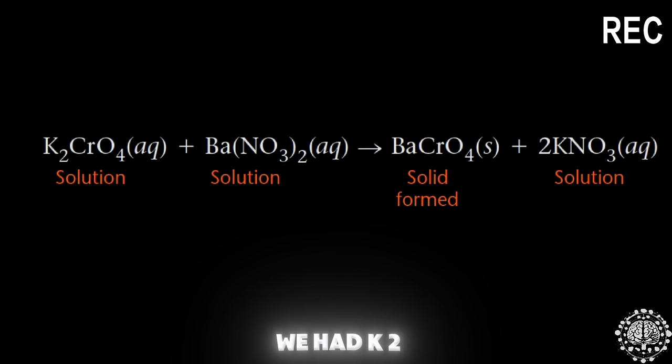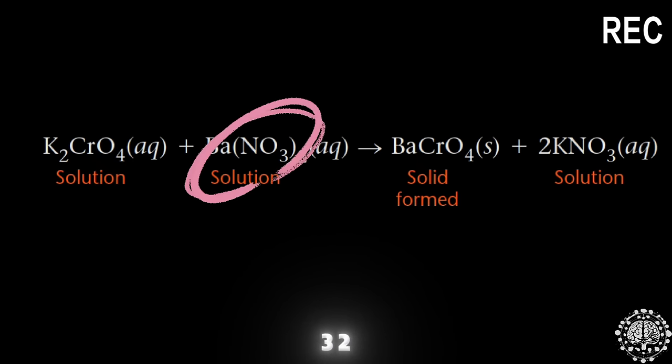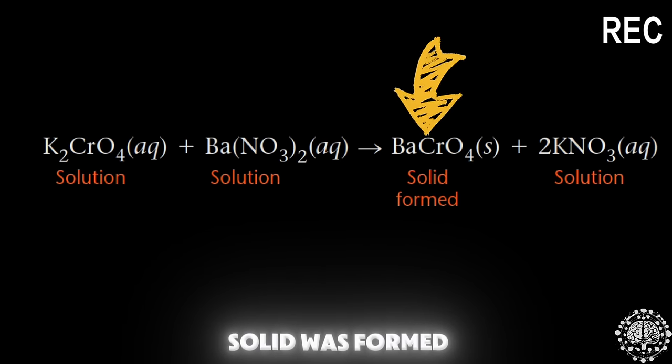For example, you can see in this reaction we had K2CrO4 and Ba(NO3)2. Now we can see that the solid was formed because CrO4, also known as chromate, is not soluble, so it would create a solid.